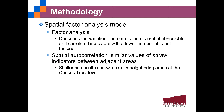We used a spatial factor analysis model to derive the composite sprawl score. Factor analysis describes the variation and correlation of a set of observable, correlated indicators with a lower number of latent factors. Urban sprawl is unobservable but manifests in multiple correlated sprawl indicators. A spatial version of factor analysis is used because those sprawl indicators are spatially autocorrelated based on Moran's I — adjacent areas have similar values — suggesting similar composite sprawl scores could be found in neighboring census tracts.